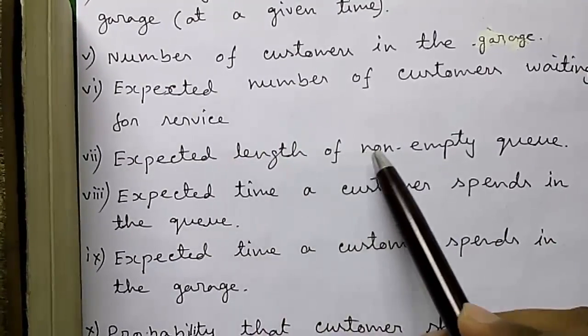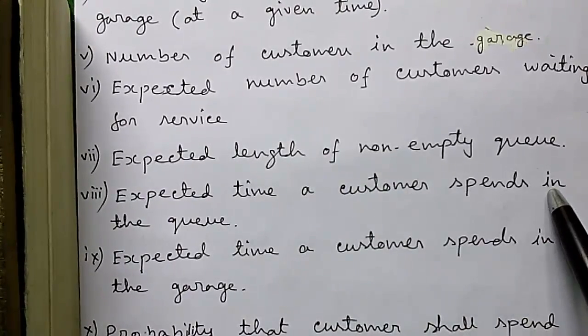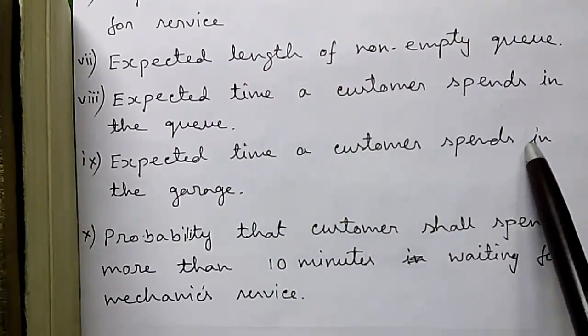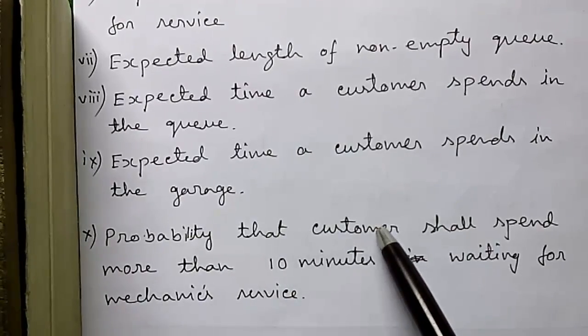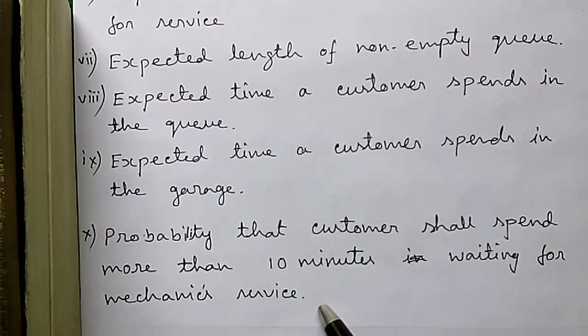Seven, expected length of non-empty queue. Eight, expected time a customer spends in the queue. Nine, expected time a customer spends in the garage. And finally, probability that the customer shall spend more than 10 minutes waiting for the mechanic service.